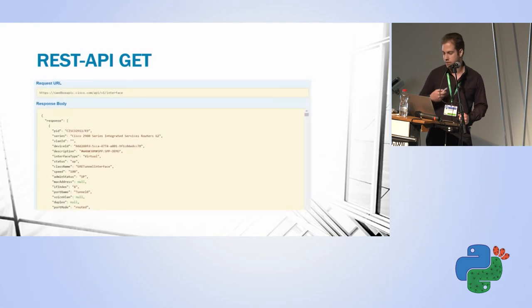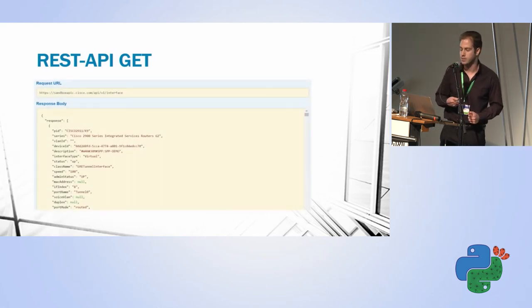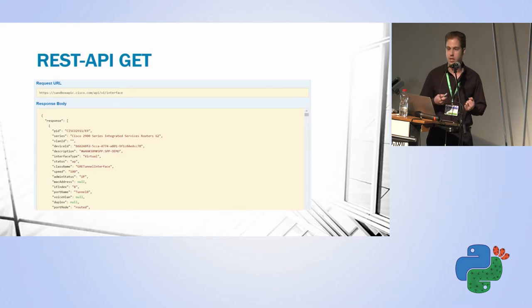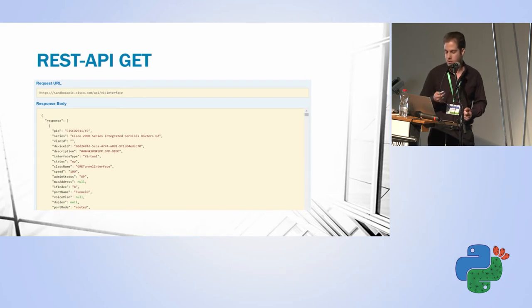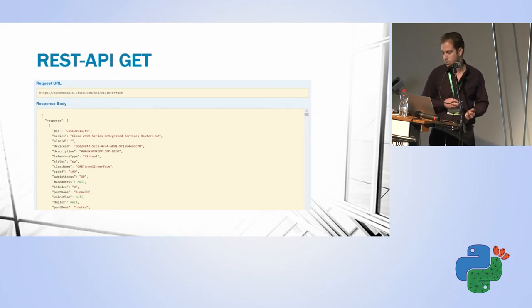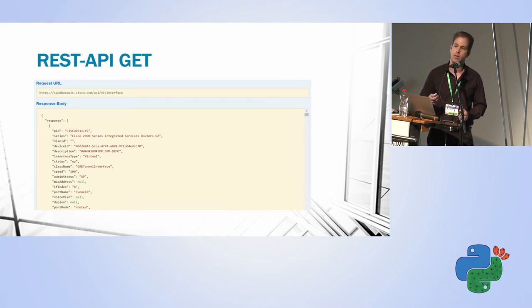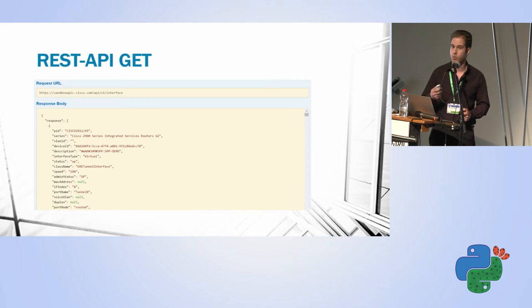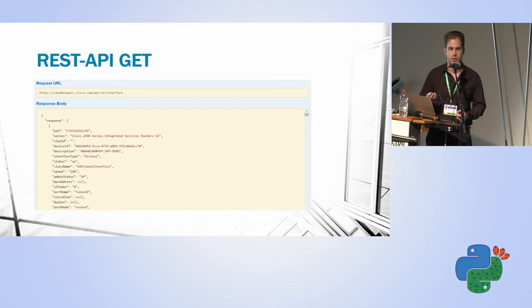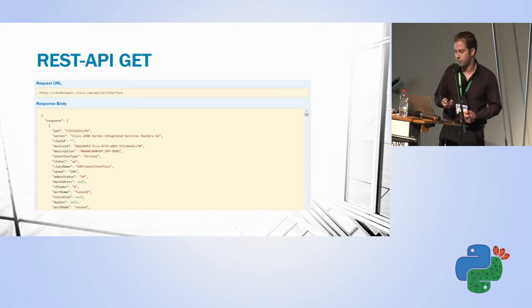The benefit of REST API is that it's very easy to work with in software development, because everything you get back is in a JSON file. Here is an example of a REST API GET call — I requested all the interface information from all my network devices and I'm getting it back in a JSON file.